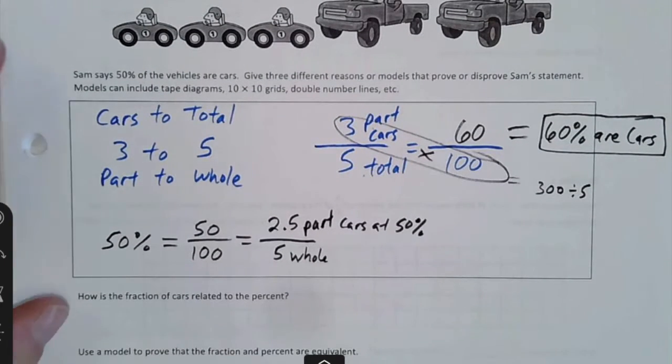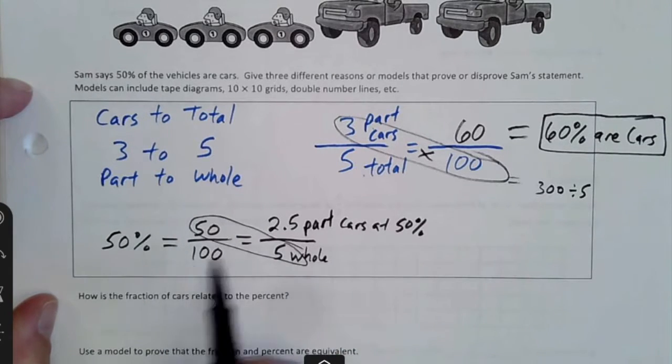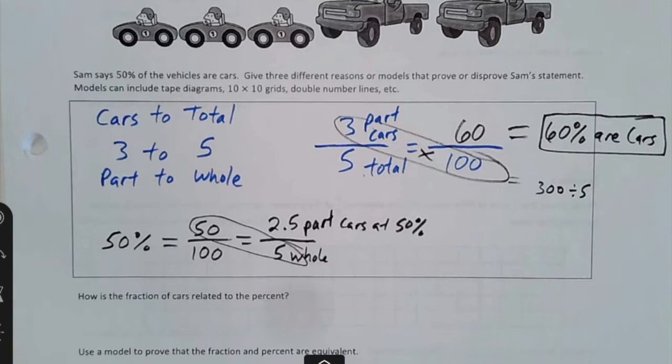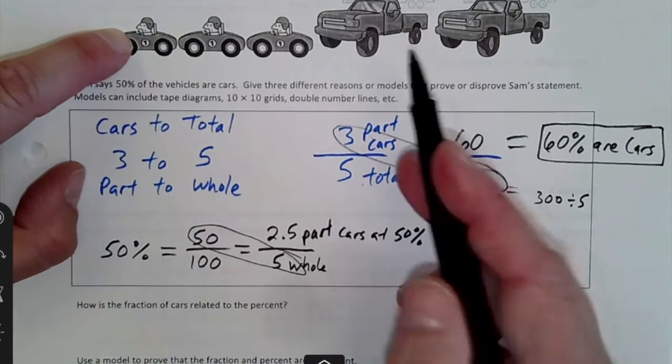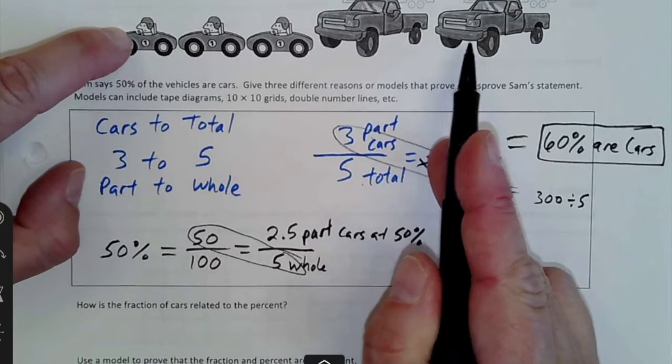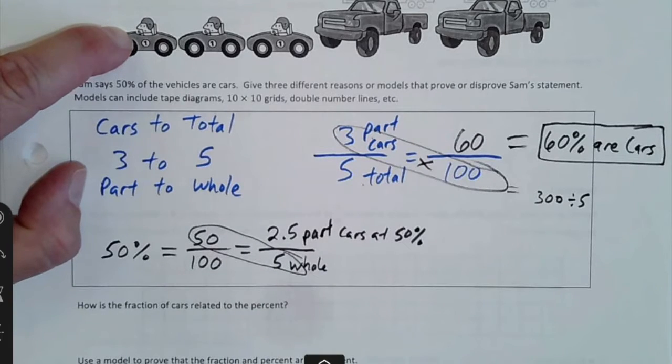Again, you could solve this cross products, 50 times five, and then divide by 100 to get that. So that kind of shows, no, 50% are not cars. It's actually 60%. If I take it a step further, if 60% are cars, then what percent are trucks? It would be 40, because 60 and 40 make a total of 100.